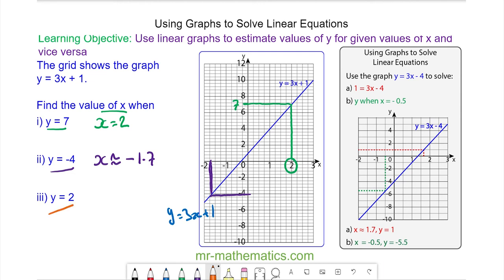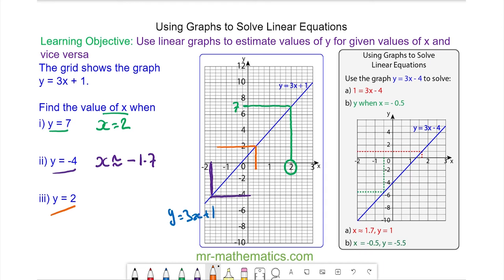So when y equals 2 we draw a horizontal line to the blue line and you can see when y equals 2 x is approximately equal to 0.3.